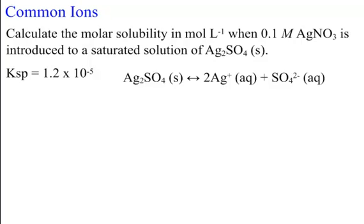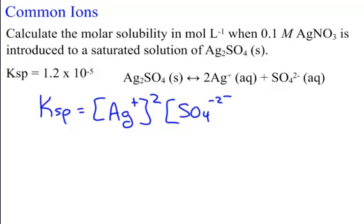Let's go to common ions. Calculate the molar solubility when a 0.1 molar AgNO3 solution is introduced to a saturated solution of silver sulfate. I'm going to get my KSP expression. I have KSP equals Ag+ squared, because there's two moles, times SO4 2-. What type of ratio is this problem? It's a two to one ratio. So what type of problem would it be in the past? It would have been a 4X cubed problem, wouldn't it?